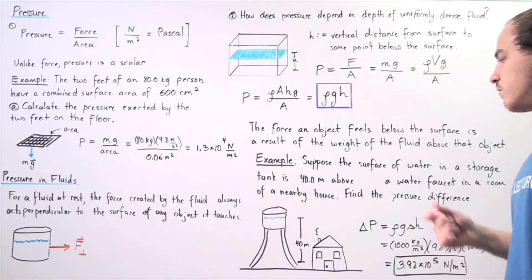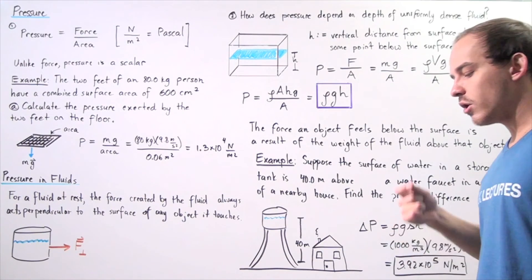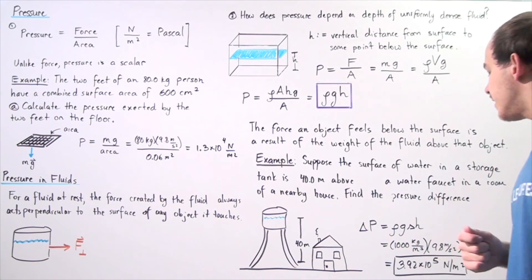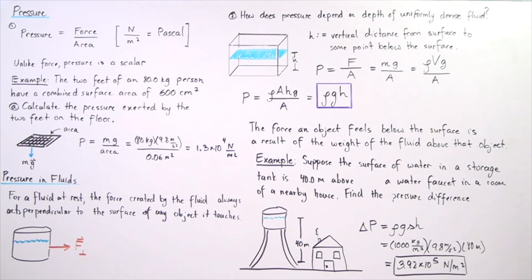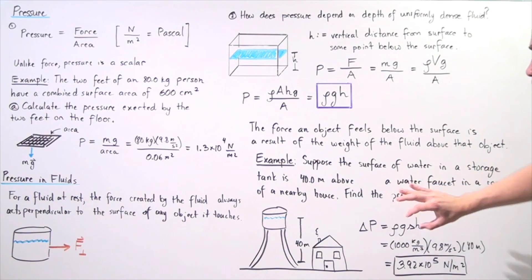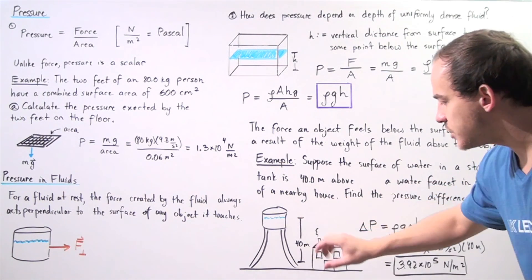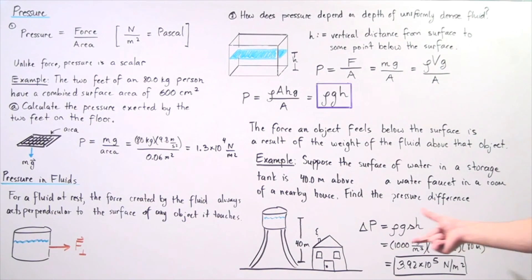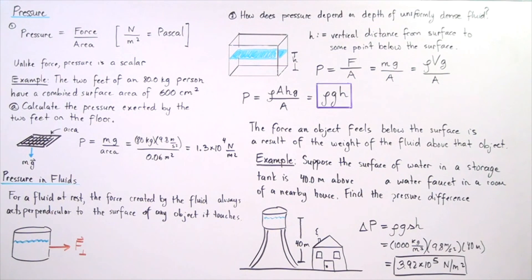The density of water at 4 degrees Celsius is 1,000 kilograms per meter cubed. The gravitational constant is 9.8 meters per second squared, and the change in h is 40 meters. We plug these quantities in, multiply them, and we get a change in pressure of 3.92 times 10 to the 5 newtons per meter squared.